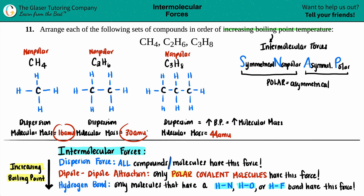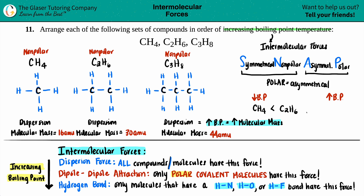Now we can clearly see 16, 30, and 44 AMU. In order of increasing boiling point — lowest to highest — that means CH4 (16 AMU) has the lowest boiling point, then C2H6 (30 AMU), then C3H8 (44 AMU) has the highest boiling point. And there is your answer.